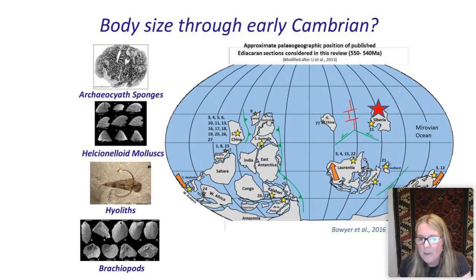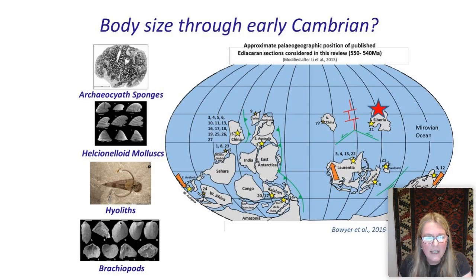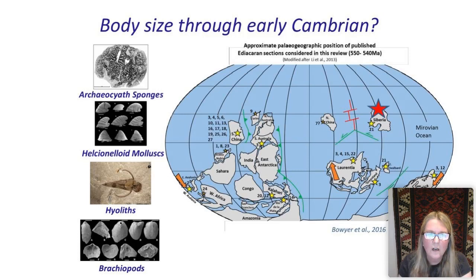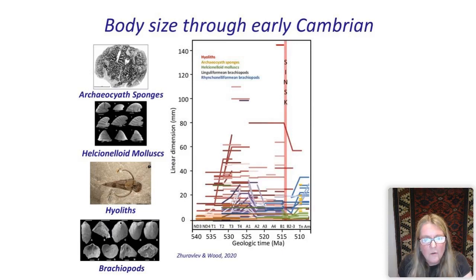The Siberian platform was a separate continent, extremely well studied by Soviet and Russian geologists. It has a very rich and well-understood biota with correlations now relatively well established. We considered these classic Cambrian groups: archaeocyathid sponges, helcionellid molluscs, hyoliths and brachiopods. We collected data from literature and our own observations, recording for every two-and-a-half-million-year time bin the largest representative recorded for that bin — simply the maximum linear dimension of these groups.